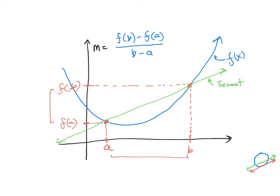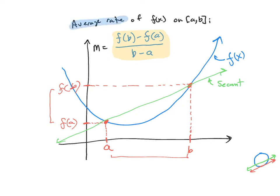We'll be interested in tangent lines to our curves and we'll get to that in a minute. For now, the average rate of change of f on [a, b] is f of b minus f of a over b minus a. This is a famous formula — essentially just the slope formula from algebra 1. Whenever somebody asks you about average rate of change, the keyword is average, and you use this slope formula.